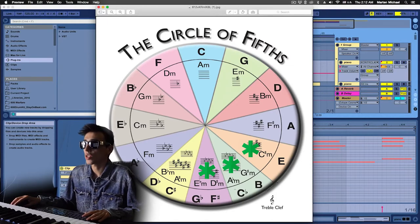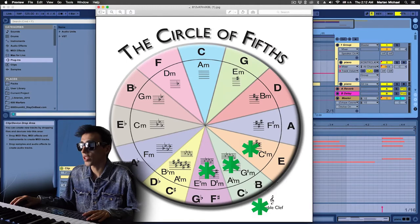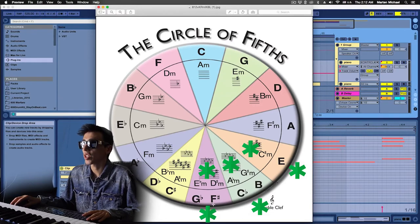Then to find out what major chords are going to work, we look directly below, which is B major. And again we go once to the left and once to the right. So we end up with B major, E major, and F sharp major.